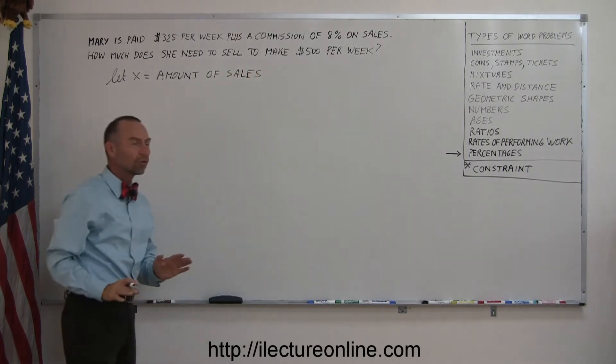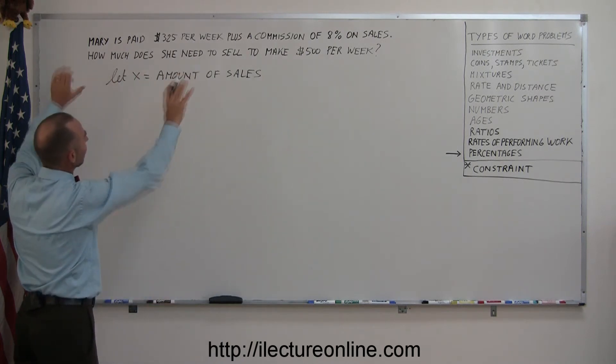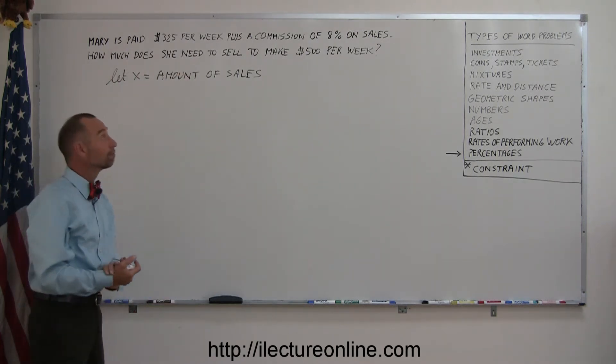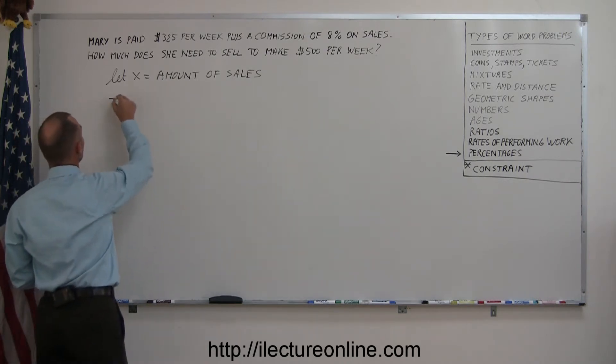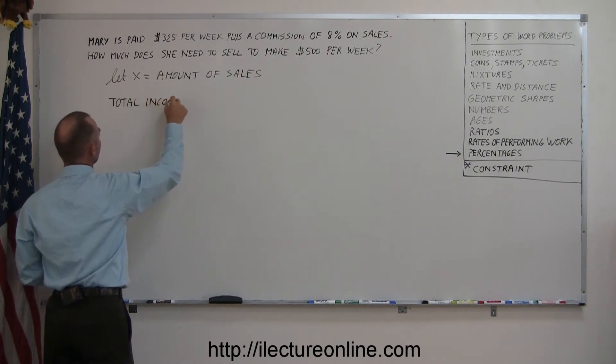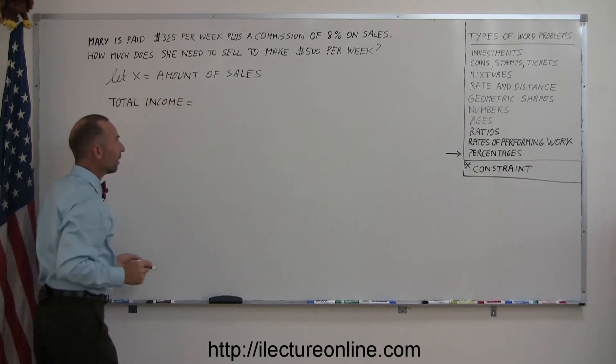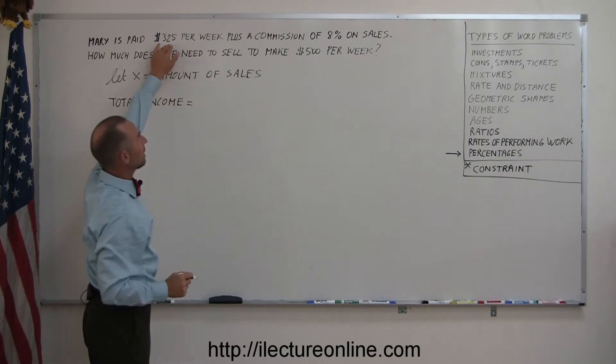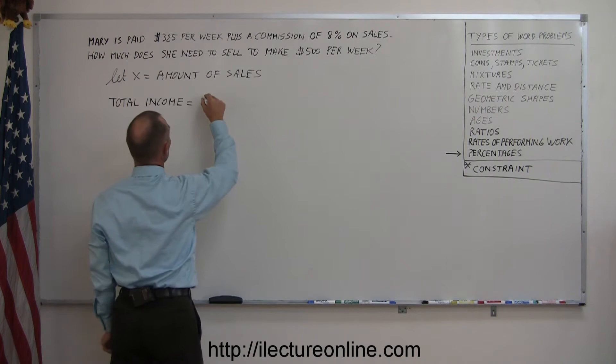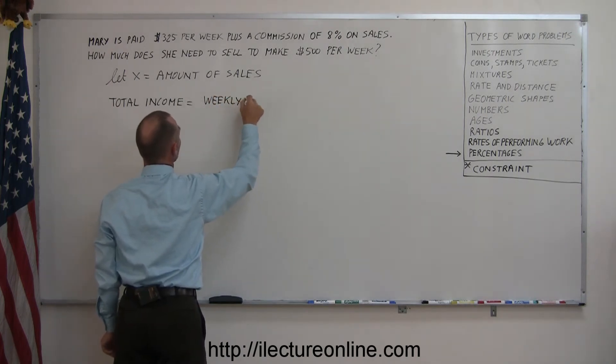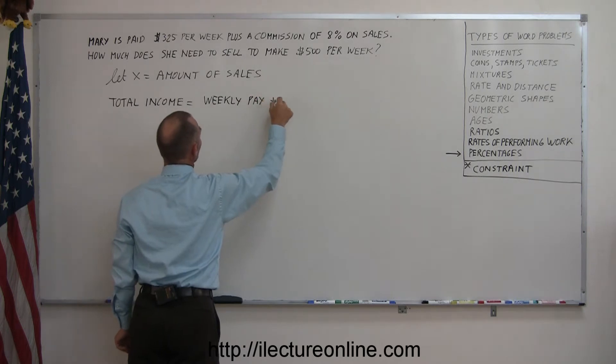Now we need an equation to describe mathematically what's written in those sentences. The total amount that she makes, so total income, is the sum of her weekly pay plus how much she makes in commission. So that would be weekly pay plus commission.